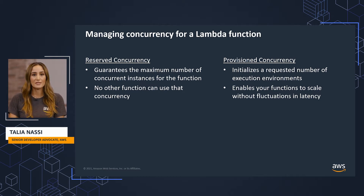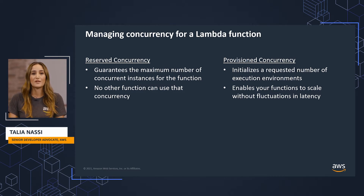Provisioned concurrency initializes a requested number of execution environments so that they're prepared to respond immediately to your function's invocations. To enable your function to scale without fluctuations in latency, use provisioned concurrency.